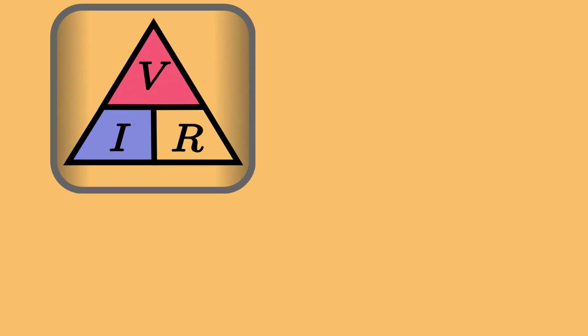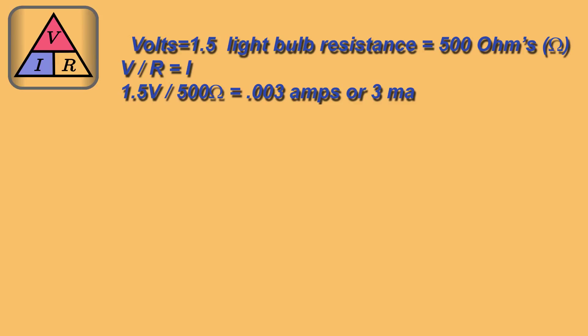Our battery is 1.5 volts. Our light bulb in this case will be 500 ohms. Therefore, we have V over R equals I. So let's plug our numbers in. 1.5 volts over 500 ohms equals 0.003 amps, or 300 milliamps.